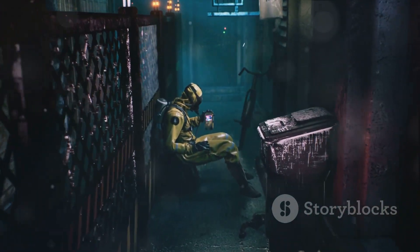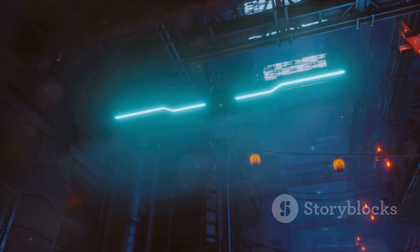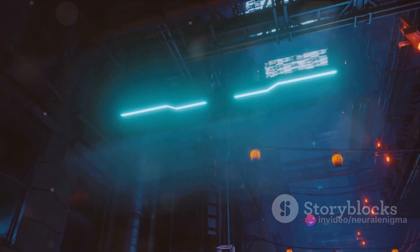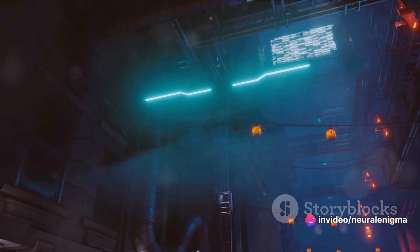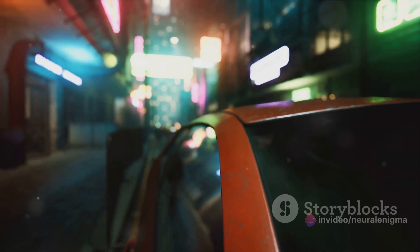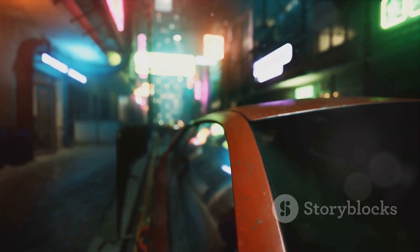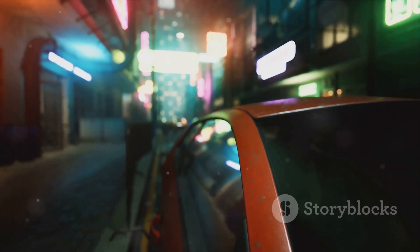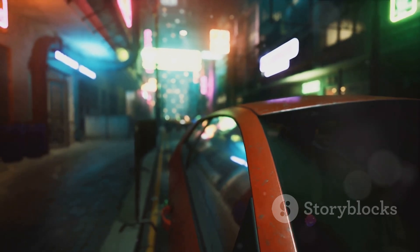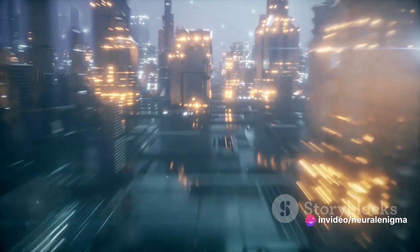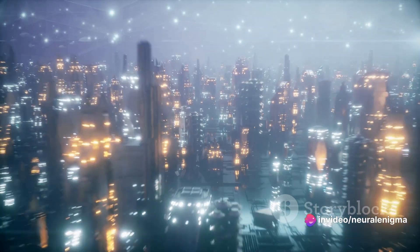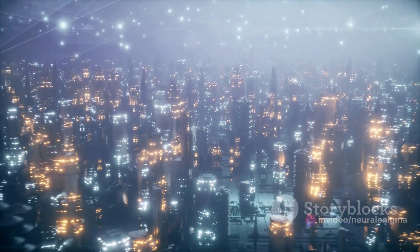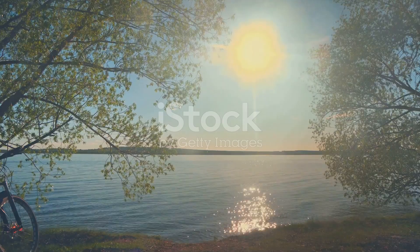Picture a pebble dropped into a pond. It creates ripples or waves that spread out in all directions. If these waves encounter a barrier with two openings, they split into two new wave sources. As these waves overlap, they interfere with each other, creating a pattern of alternating light and dark bands on a screen placed behind. This is what we call an interference pattern, a classic characteristic of wave behavior.